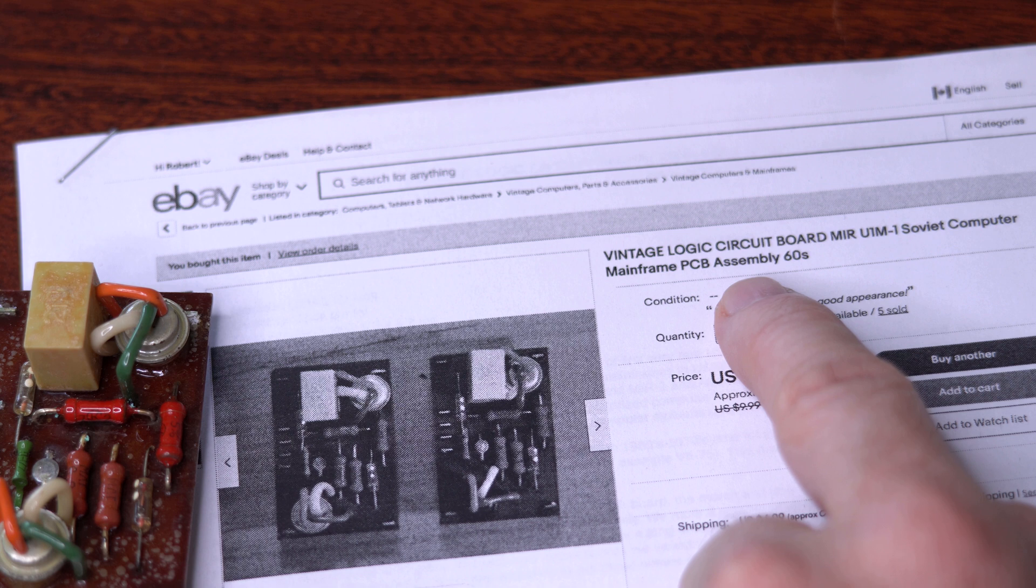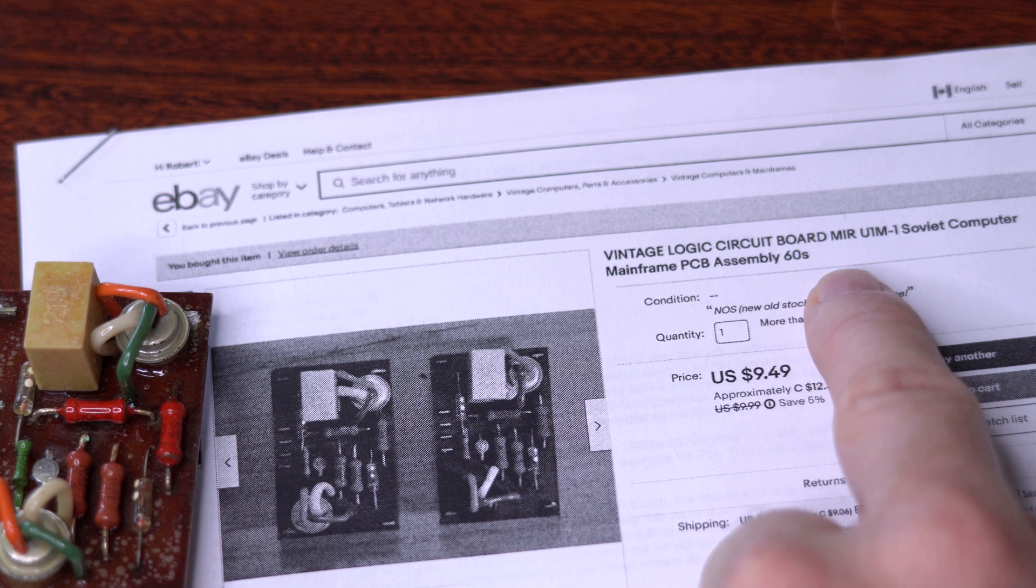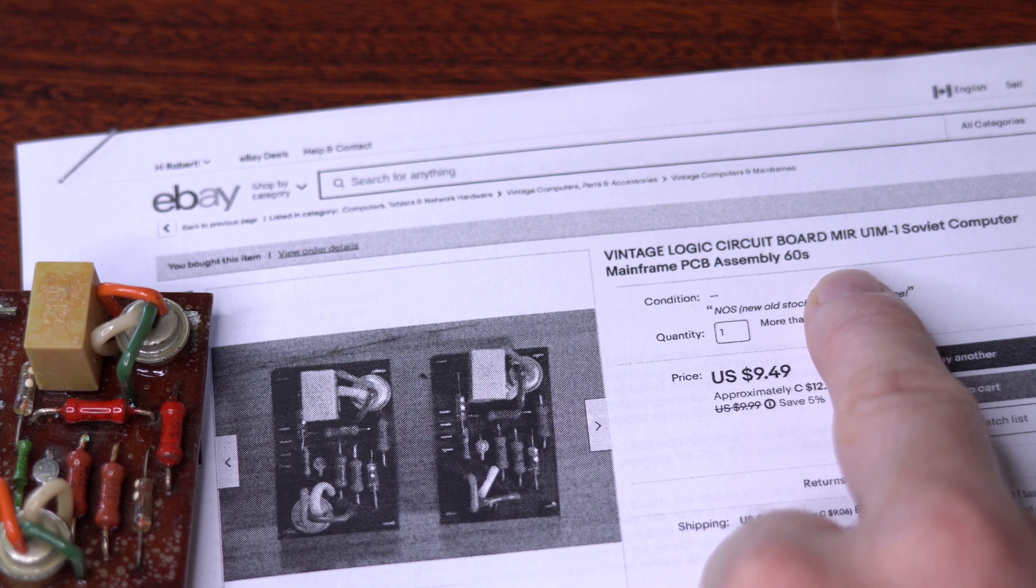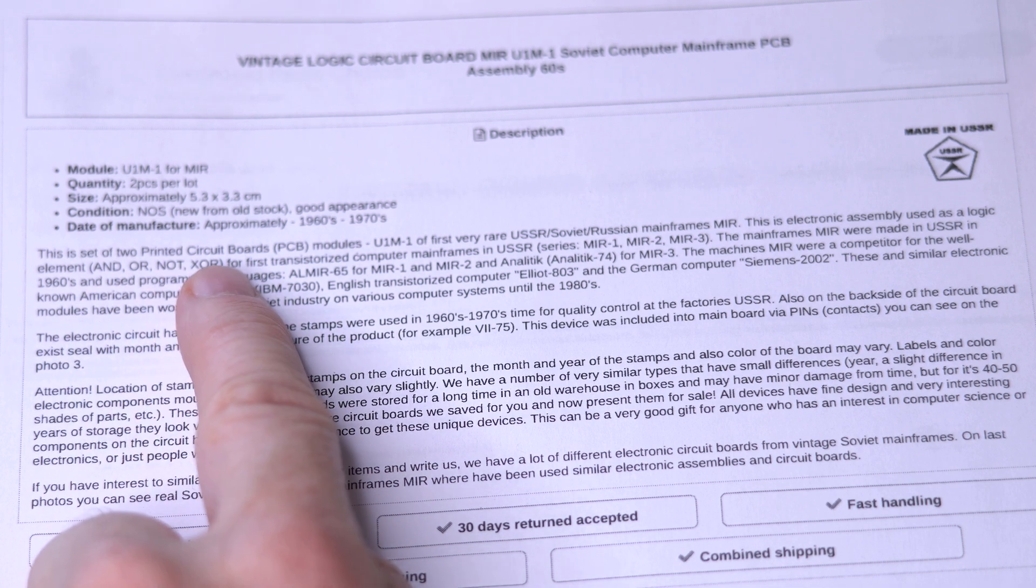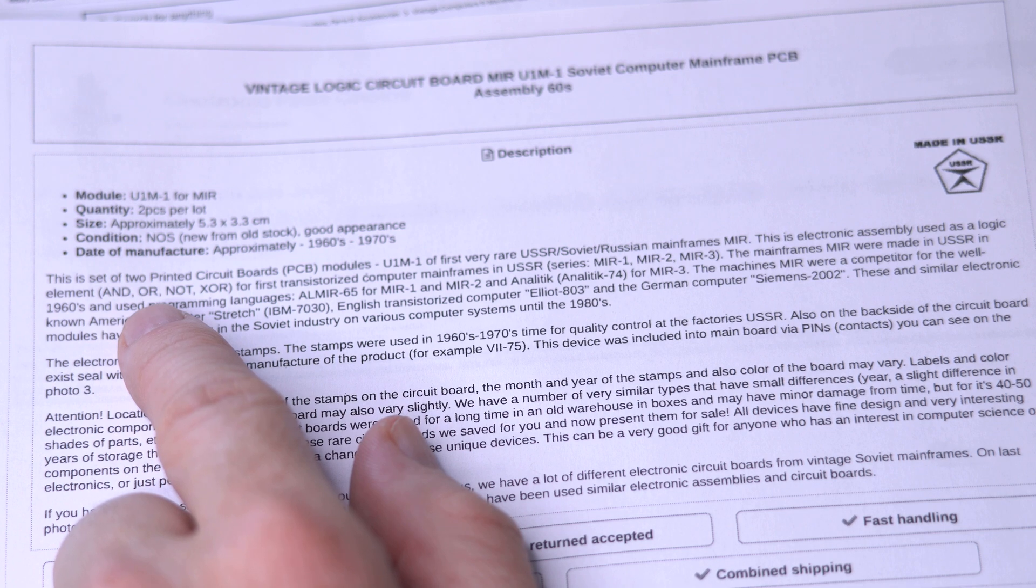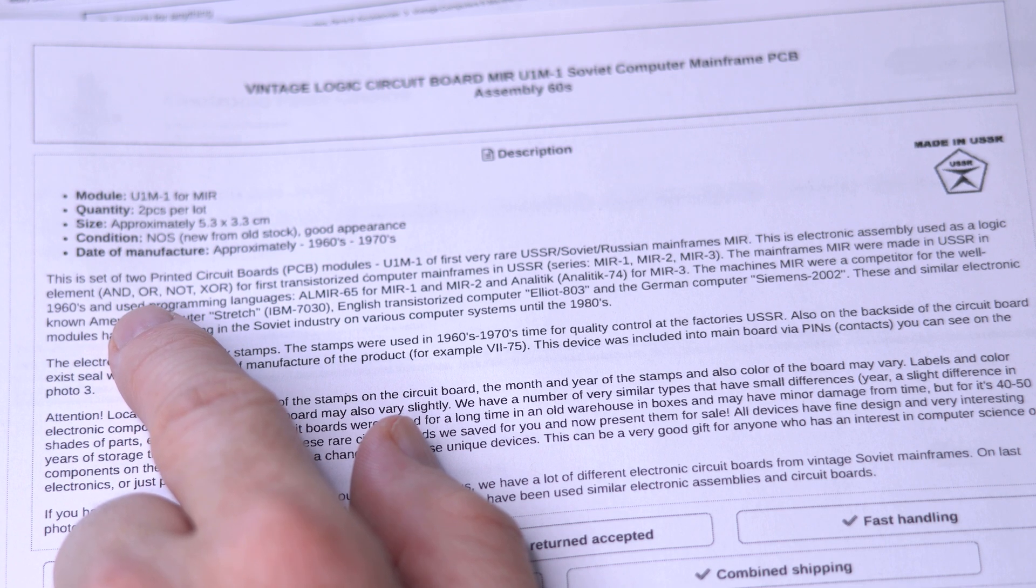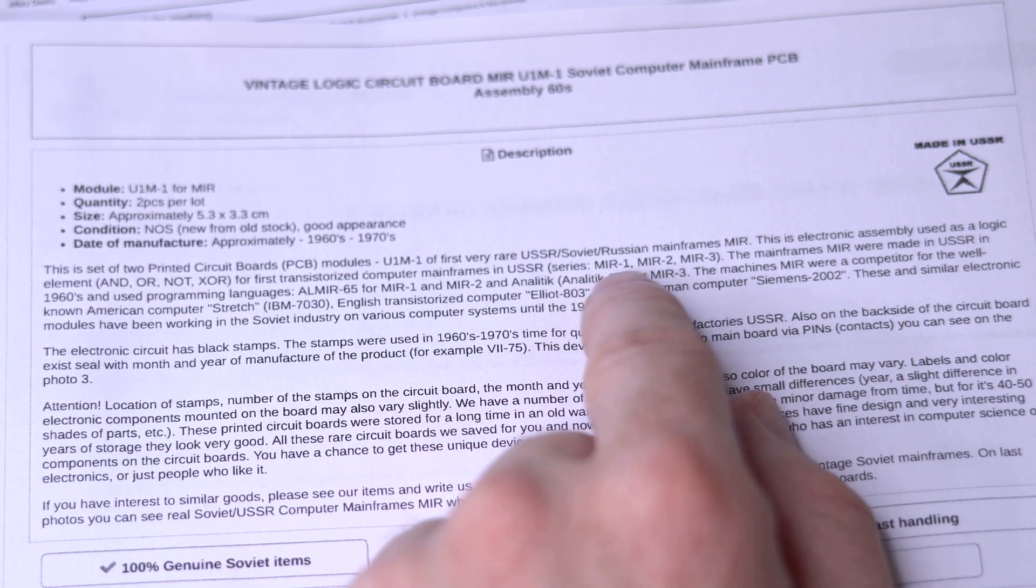So I guess this one is a logic circuit board for a Mir U1M1 Soviet computer. So according to this, it's actually a set of two printed circuit boards. And supposedly, assuming this description is correct, these circuit boards will implement one of the fundamental logical operations for one of these Soviet-era mainframe computers.